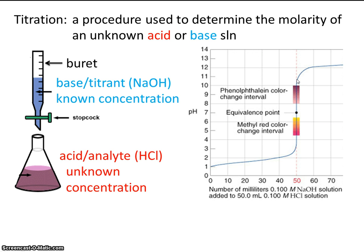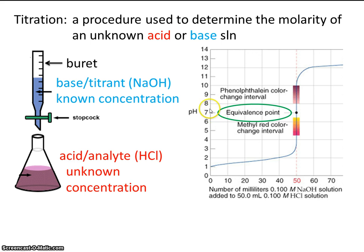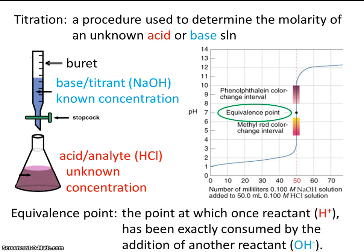When we've reacted exactly equal amounts of acid and base, we should be at what's called the equivalence point. At the equivalence point, we'll have a pH of exactly 7 because all of the H⁺ ions will have reacted with all of the OH⁻ ions to make salt and water. That's the point at which one reactant — the acid — has been exactly consumed by the addition of another reactant, the hydroxide ion or base.